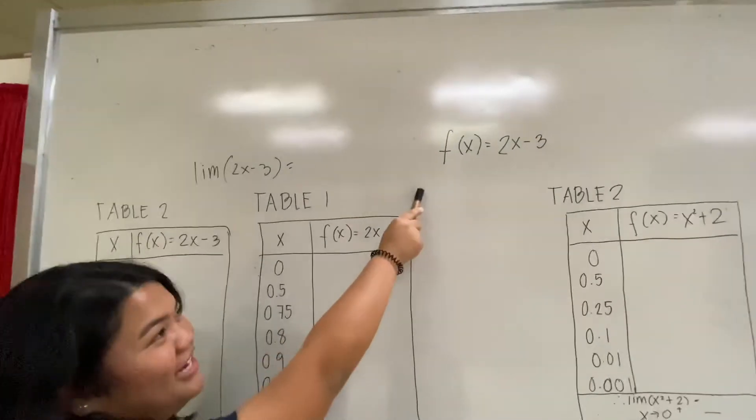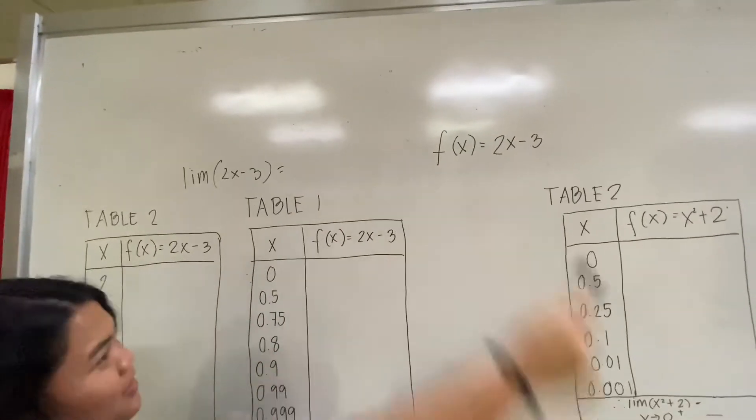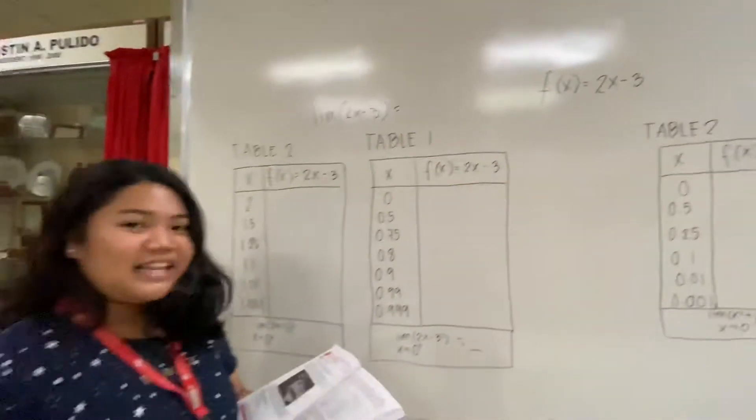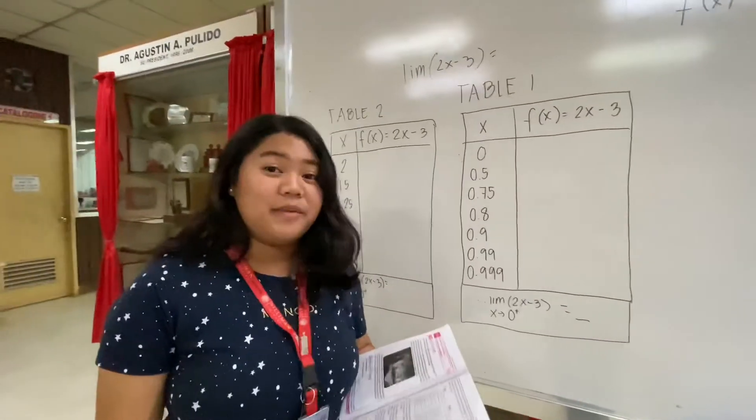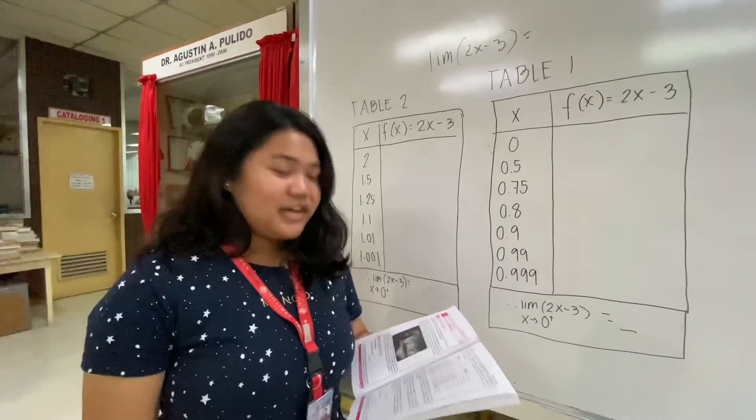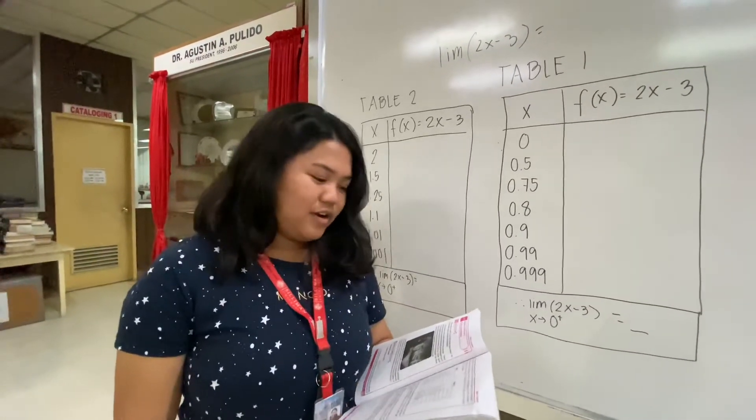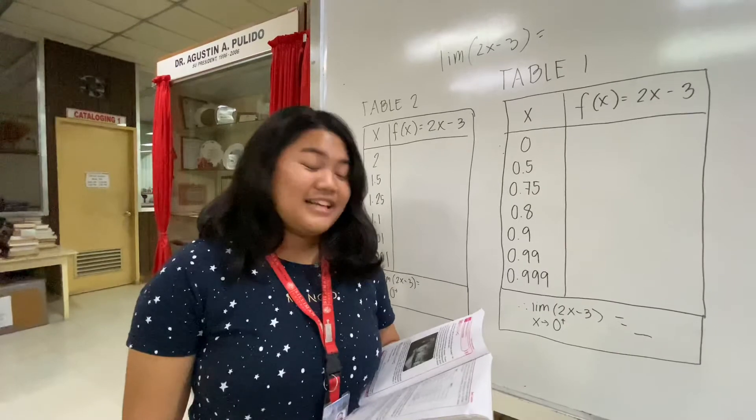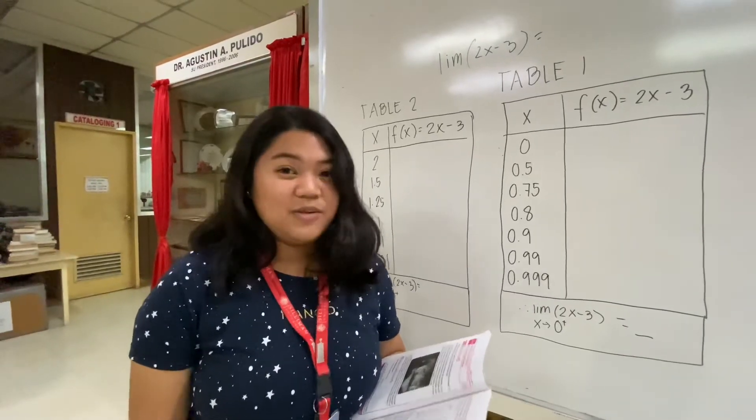Consider the linear function f(x) = 2x - 3. Let us say that we want to determine the limit of f(x) as x approaches 1. This means that we are interested in looking at the behavior of the function f as the values of x get closer and closer to the number 1.